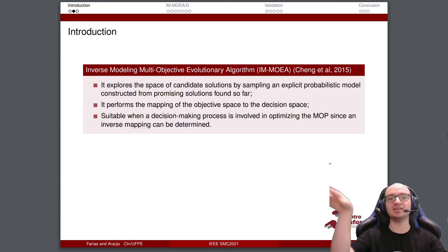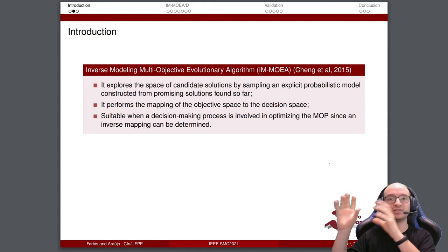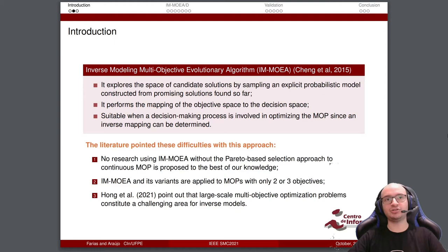If you are working in the objective space, the decision-making process is easier because you have chosen the solutions directly in the objective space. This is a very nice solution. But the literature pointed the difficulties with this approach. First, no research using IM-MOEA without Pareto-based selection approach to continuous MOP is proposed, to the best of our knowledge.